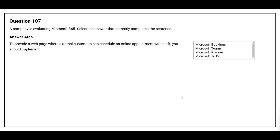Question 107. A company is evaluating Microsoft 365. Select the answer that correctly completes the sentence: to provide a webpage where external customers can schedule an online appointment with staff, you should implement. The correct answer is Microsoft Bookings.